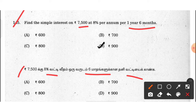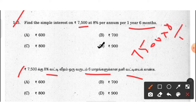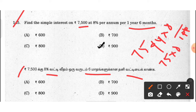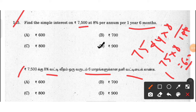This is how you can find it. So this is 1 year 6 months.